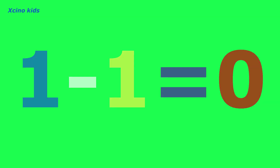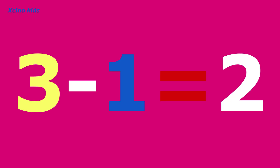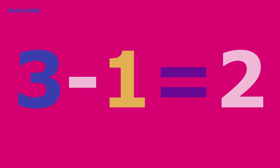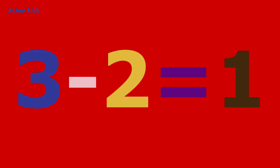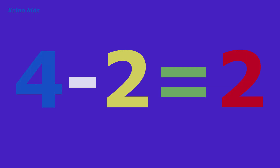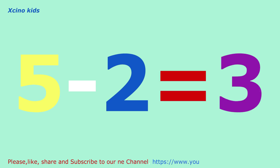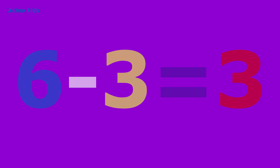1 minus 1 is equal to 0. 2 minus 1 is equal to 1. 3 minus 1 is equal to 2. 3 minus 2 is equal to 1. 4 minus 2 is equal to 2. 5 minus 2 is equal to 3. 6 minus 3 is equal to 3. 7 minus 3 is equal to 4.